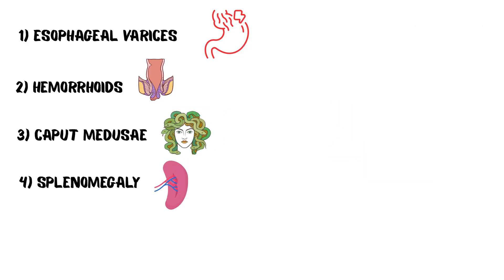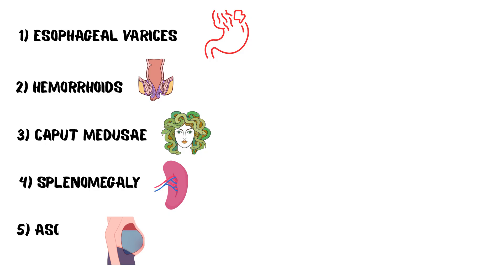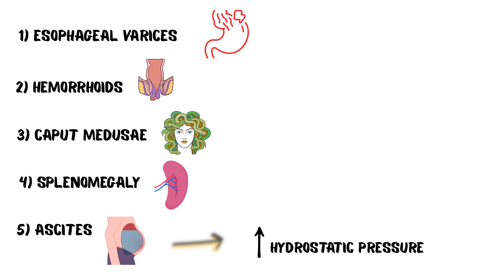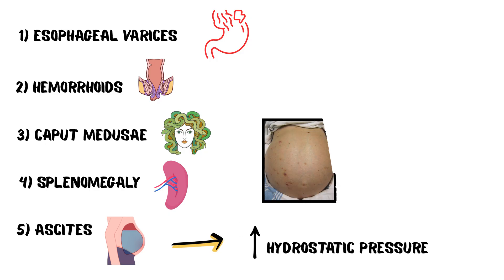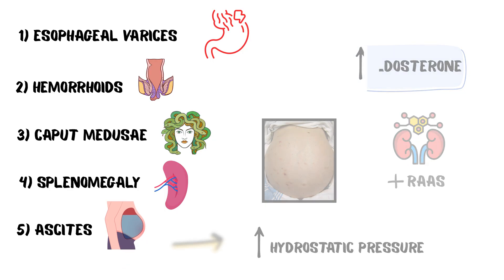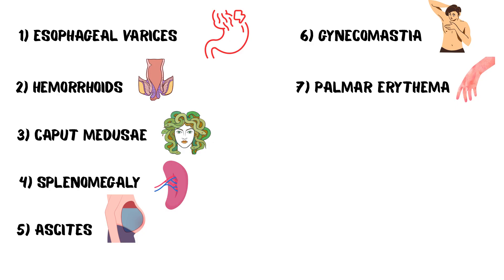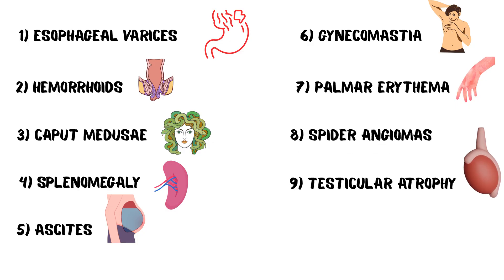Splenomegaly develops from venous congestion and may cause hypersplenism with thrombocytopenia. Ascites forms due to increased hydrostatic pressure and activation of the renin-angiotensin-aldosterone system. Impaired estrogen metabolism causes gynecomastia, palmar erythema, spider angiomata, and testicular atrophy. Jaundice may appear from poor bilirubin clearance.